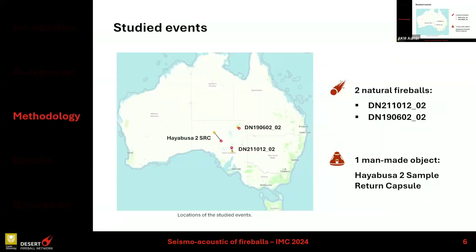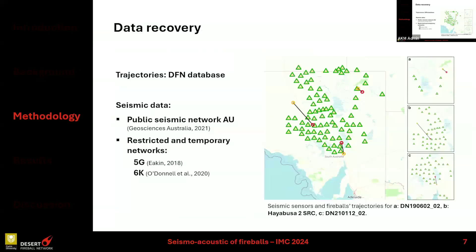In this study we focused on three different events: two natural ones, DN21 and DN19, and the main object is the re-entry of the Hayabusa2 sample return capsule. They are both located in South Australia. All the trajectories are provided by the DFN, and I recovered the seismic data from